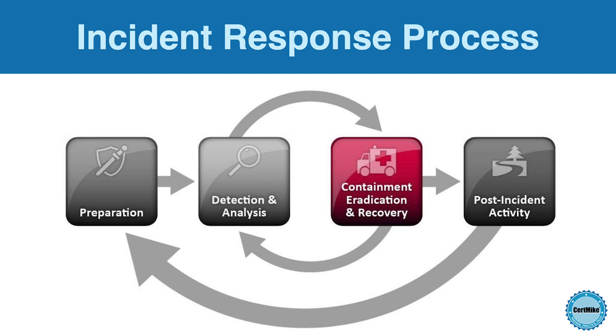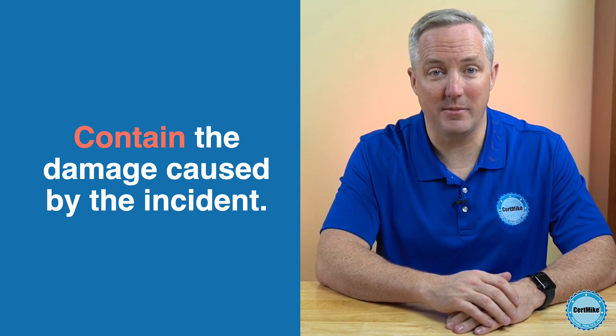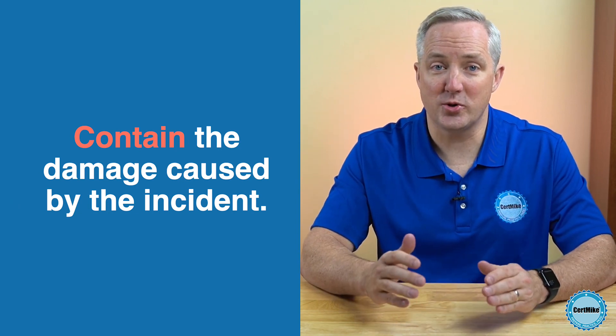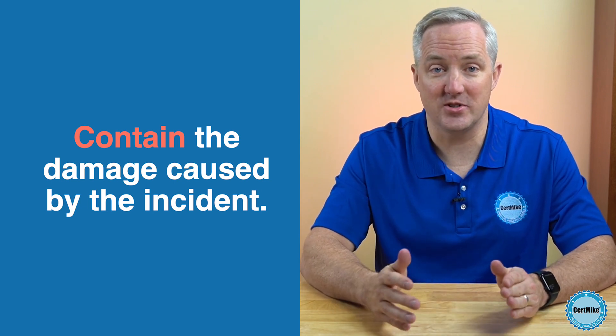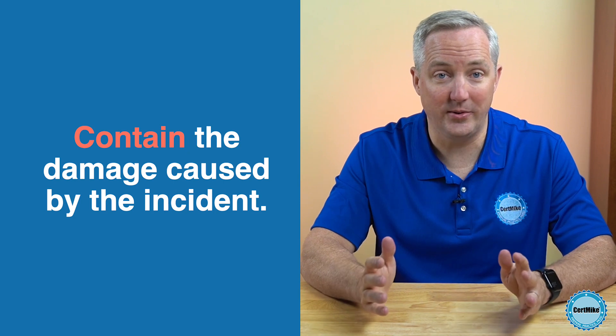During the containment, eradication, and recovery phases of incident response, you have three goals: contain the damage, remove any effects of the incident from your systems and networks, and get things back to normal as quickly as possible. If you've done your work well in the preparation phase, this is where it all pays off. The biggest difference between the earlier phases and this phase is that you've shifted from the passive activities of detection and analysis into an active phase where you are taking actions in response to the incident. Your first priority should be containing the damage caused by the incident. You want to limit the future activity of the attacker so that they can't do further damage to the confidentiality, integrity, or availability of your systems or networks.